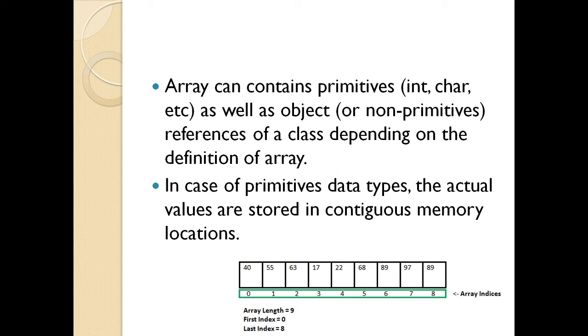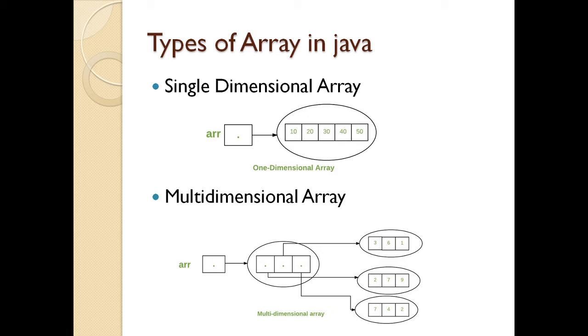So your array position will be zero for the first element. An array can be primitive data types, that is integer, character, etc. or non-primitive, it can be an object also. It gives reference of a class depending on the definition of an array. Now in case of primitive data types, the actual values are stored in contiguous memory location. Now look at this image, where in array indexes, it starts from 0, 1, 2, 3, 4 till 8, the size of the array or the array length is 9, counting from the 0. First index is 0, last index is 8 and 40, 55, 63, 70 are the values which are stored at that particular index.